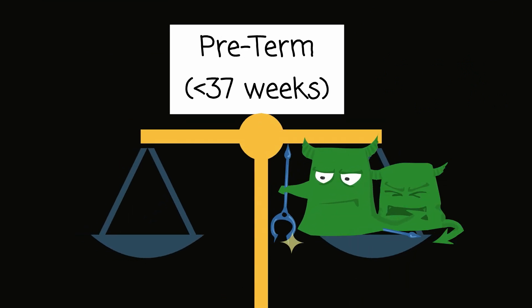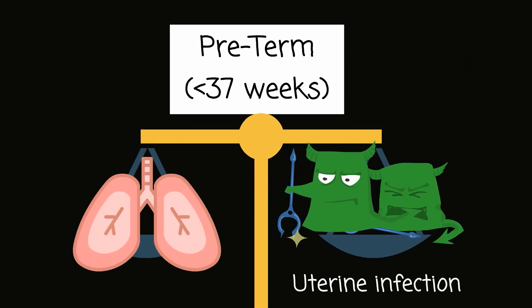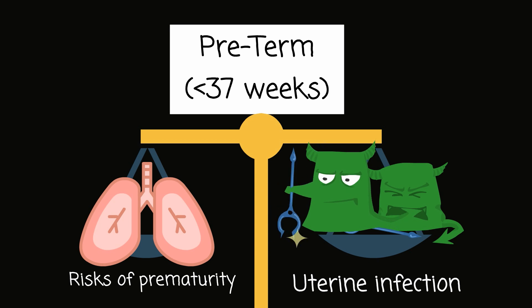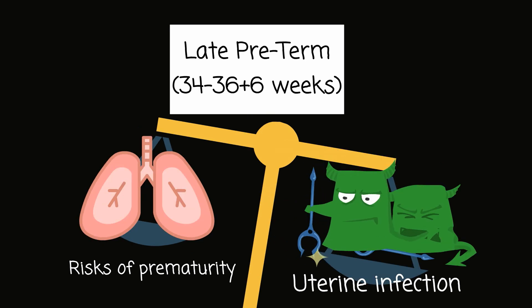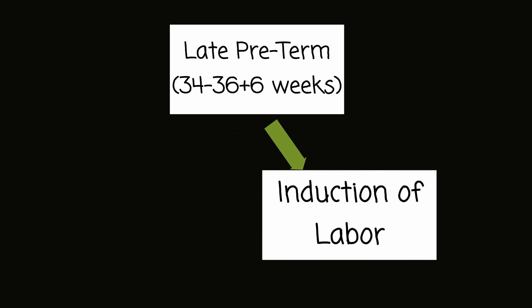For patients who are preterm, or less than 37 weeks, the risks of uterine infection versus the risks of prematurity need to be weighed carefully. For late preterm patients from 34 to 36 weeks and 6 days estimated gestational age, the management is the same as term, for the risks of infection outweigh the risks of prematurity. An induction of labor is started for these patients once rupture of membranes is confirmed. If the fetus is breached, then a cesarean section will have to be performed.